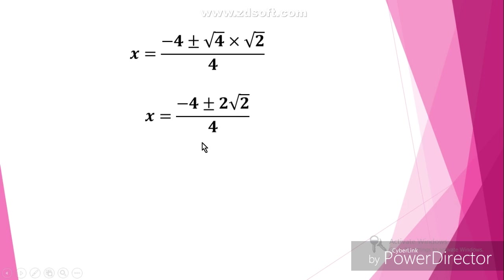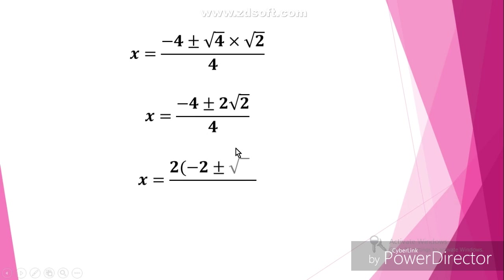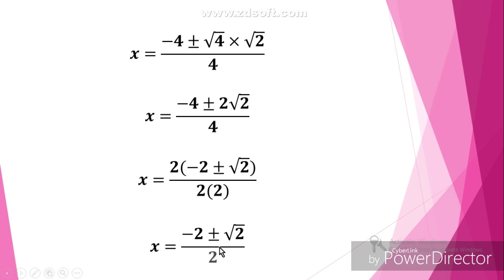We can easily see there is a common factor of 2 in the numerator, so taking out the common 2 we are left with minus 2 plus or minus root 2, divided by 4. Simplifying further, x is equal to minus 2 plus or minus root 2, divided by 2.